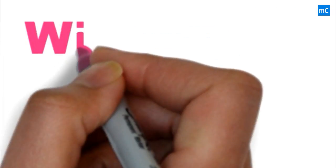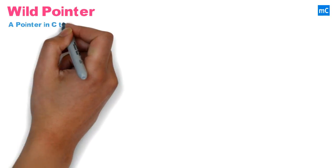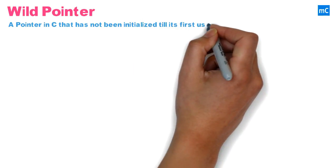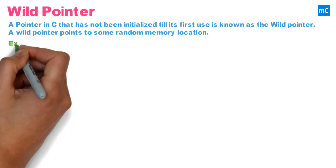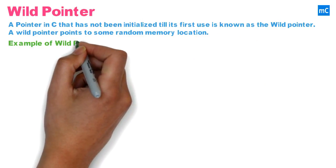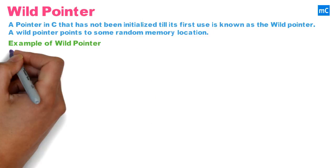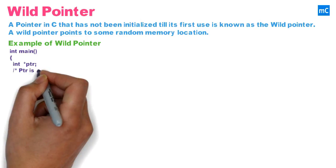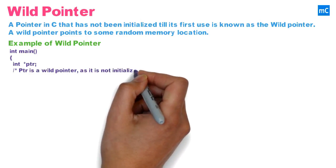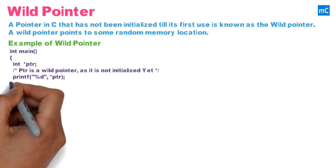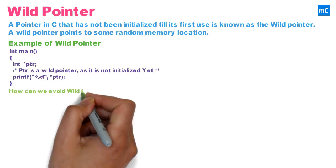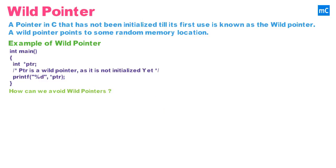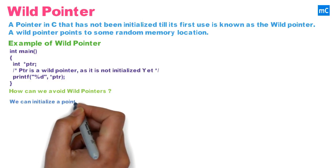Next, wild pointer. A pointer in C that has not been initialized before its first use is known as a wild pointer. A wild pointer points to some random memory location. In this example, pointer ptr is a wild pointer as it is not initialized. We can avoid a wild pointer by initializing a pointer at the point of declaration.